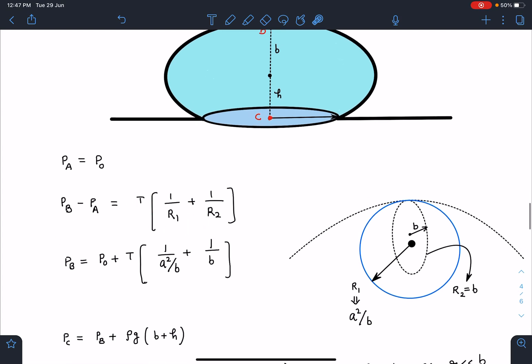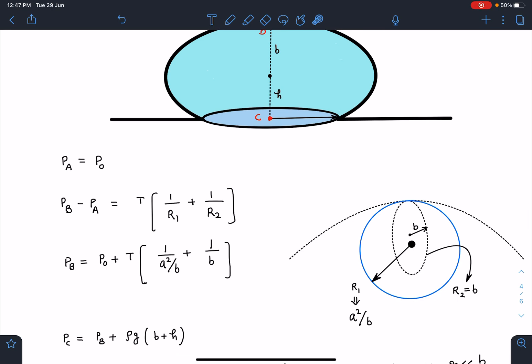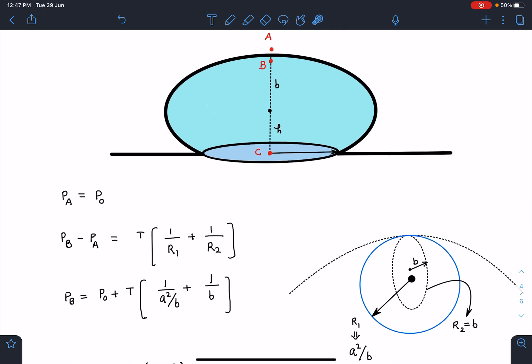The bigger radius of curvature is a²/b and the other radius is b. You must remember these results for objective problems. Pressure at B is p₀ plus T times (b/a² + 1/b). Similarly, the pressure at point C, assuming height h, will be pB plus ρg(b+h). Now I'm using an approximation because solving without approximation gave terrible calculations.